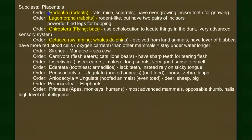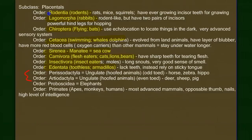Continuing through placental orders: Sirenia includes the manatee — the word 'serene' is an appropriate term for them. Carnivora includes all the cats, lions, and bears. Insectivora, Edentata includes the armadillos. The orders Perissodactyla and Artiodactyla are the hooved animals — odd-toed (like horses, with one main toe) and even-toed (like deer, with two toes). Proboscidea means nose — the elephants with their long snouts. And then the primates.